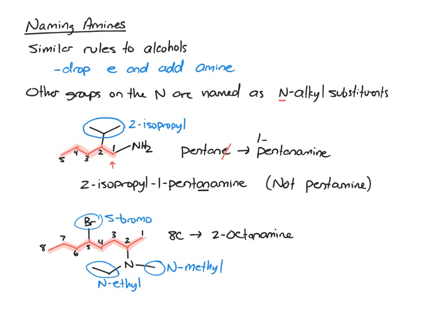Now, you just alphabetize these substituents by the first letter. The N doesn't count for alphabetizing. So, B comes first. So, we start with 5-bromo.